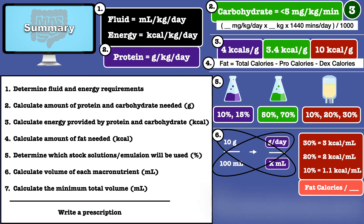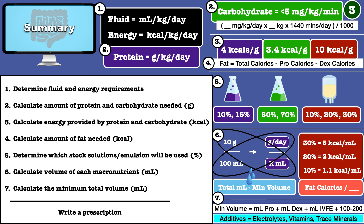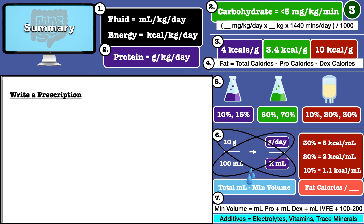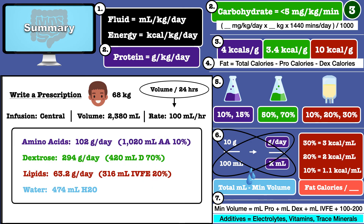Coming to an end, you calculate the minimum total volume, which is the lowest volume you can use to fit the ingredients. It must always account for the 100 to 200 milliliters provided by additives like electrolytes, vitamins, and trace minerals. You can calculate how much sterile water should be added by taking the total desired volume and subtracting the minimum total volume. Finally, you are ready to write a prescription. The prescription should always identify the patient and the weight used for calculations, the infusion site, the total volume, and the rate in milliliters per hour. Macronutrients should always be written in grams per day to avoid confusion or error if the stock solution or fat emulsion changes.